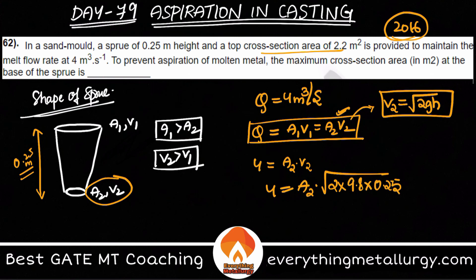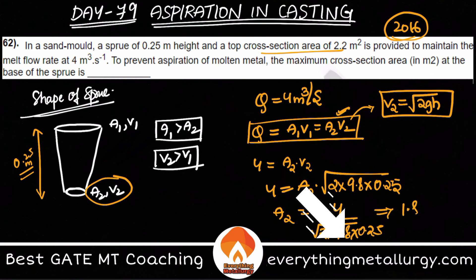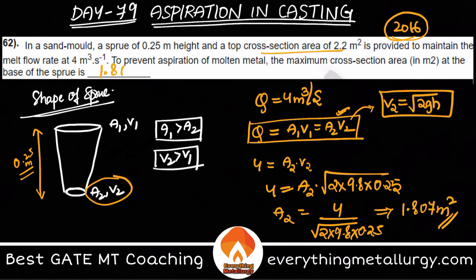So bringing that together: 4 equals A2 into root of 2 into G (9.8) into H (0.25). Solving this gives A2 equal to 4 divided by root of (2 × 9.8 × 0.25), and this gives A2 as 1.807 meter square. So your answer should be 1.807 m².